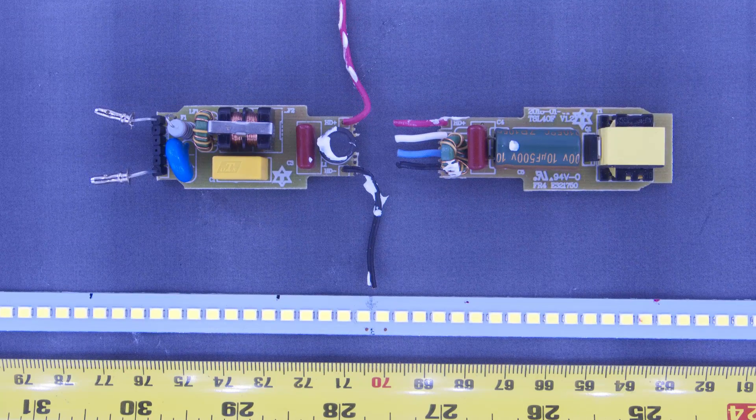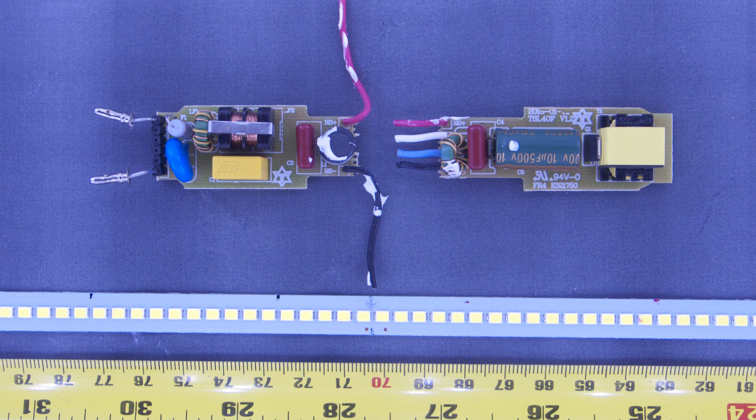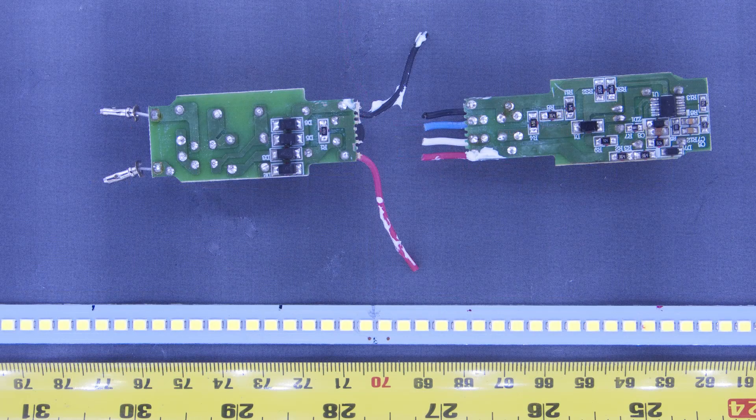Here's a close-up of the two driver boards and thinking about it it makes sense to split the boards into two as it means you haven't got one big board giving you a dark end on the tube. You can tuck away a board in each end and sort of balance it out. The powered end just appears to be a filter and a rectifier with the unpowered end carrying the smoother cap and the LED driver circuit itself.